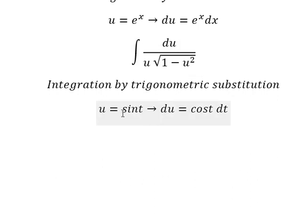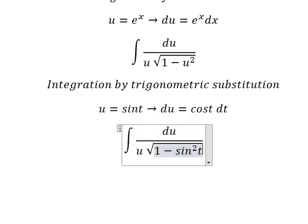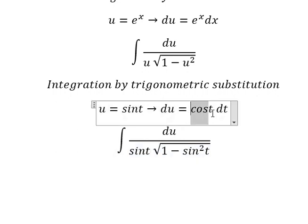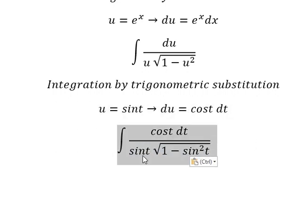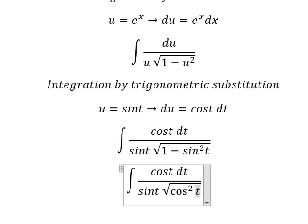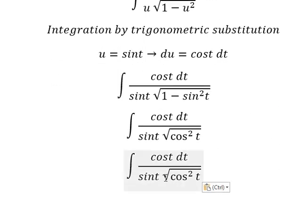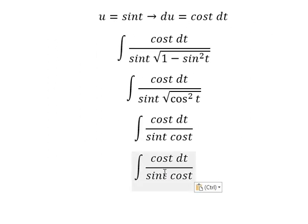After we do the first derivative of sin(t), I will substitute this in. The du we change to cos(t) dt. This term we change to cos²(t), and the square root of this gives us cos(t). Now we simplify cos(t).